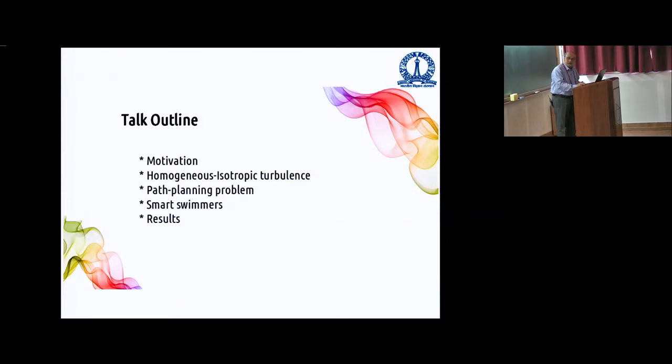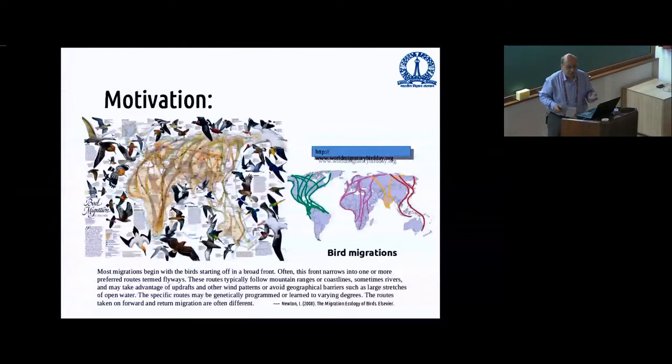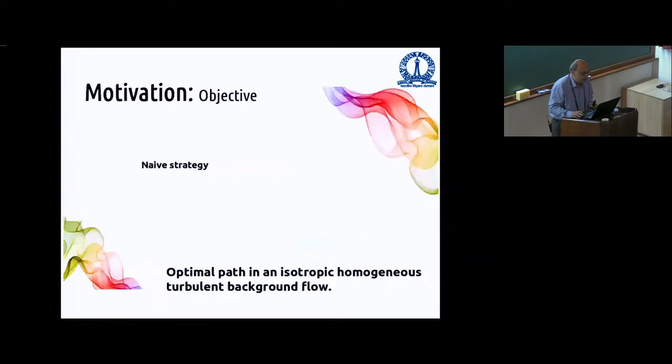So here is motivation. I'll talk a little bit about homogeneous isotropic turbulence, path planning problems, smart swimmers, and results. Birds migrate. They have to fly several thousands of kilometers. They don't always flap their wings. They often take advantage of warm updrafts in the atmosphere. So they're being smart. They're somehow finding out some things about the flow. I will talk about much smaller swimmers, for those who know the jargon of turbulence, sub-Kolmogorov scale.